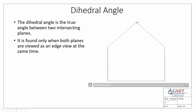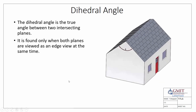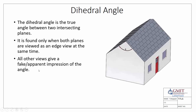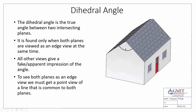Looking in at the gable end of the house, we can see the true angle between our two roof surfaces. Both surface one and surface two are seen as an edge view, and this gives us the true angle or dihedral angle between them. All other views give a fake or apparent impression — only when you see both surfaces as an edge view will you see the true dihedral angle. To see both planes as an edge view, we must get a point view of a line common to both planes, known as the line of intersection.